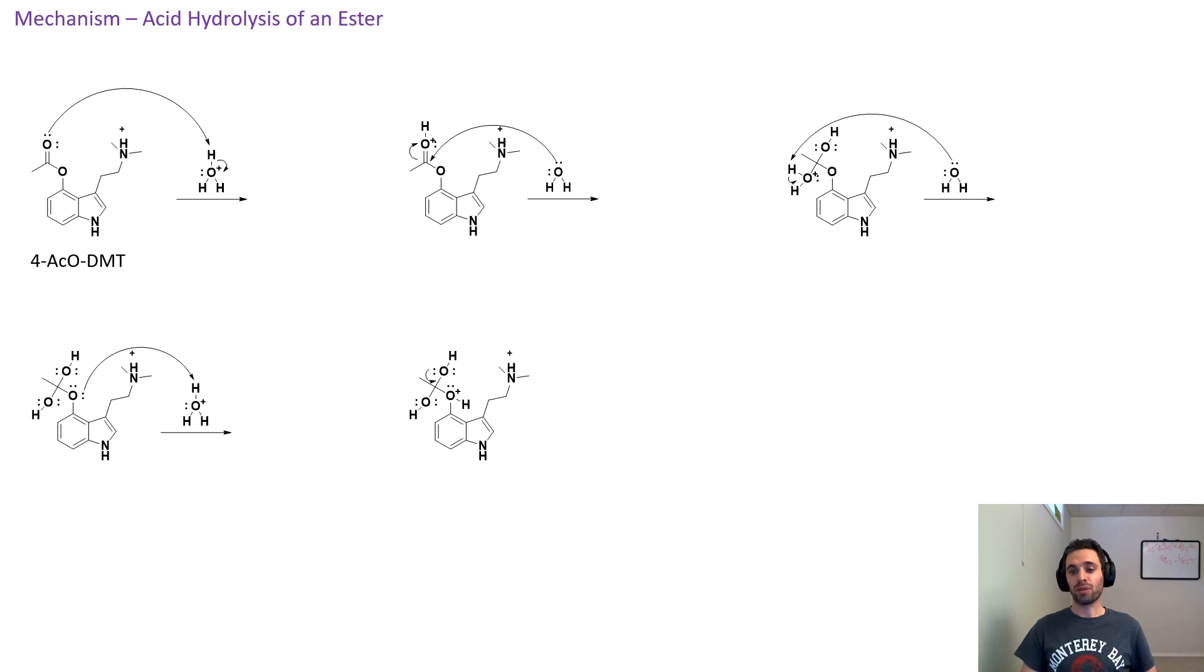The last step in the mechanism is for electrons to thrust down from the oxygen on the top, which will forcefully break these two molecules apart, giving us our end product. Our end product in this reaction is psilocin, of course, neutrally charged except for the positively charged amine, and this positively charged ethanoic acid.